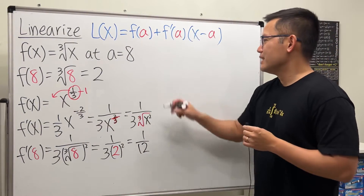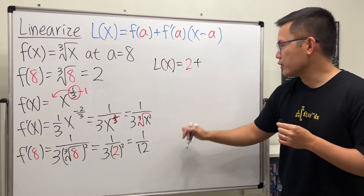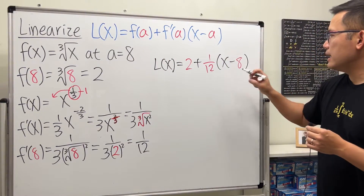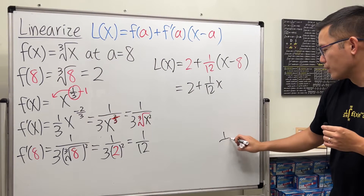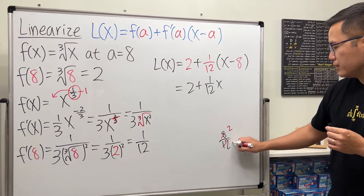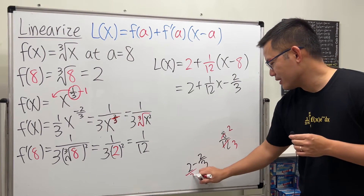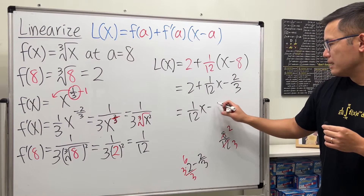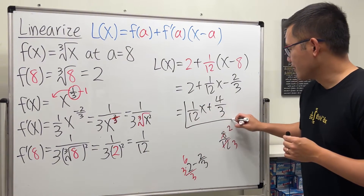Now plugging everything into the formula: L of x equals f of a which is 2, plus the derivative 1/12, times x minus a which is 8. Expanding: 2 plus 1/12 times x minus 1/12 times 8. That gives 1/12 x minus 2/3. Getting a common denominator with 2: that becomes 6/3, so 6/3 minus 2/3 is 4/3. Therefore L of x equals 1/12 x plus 4/3.